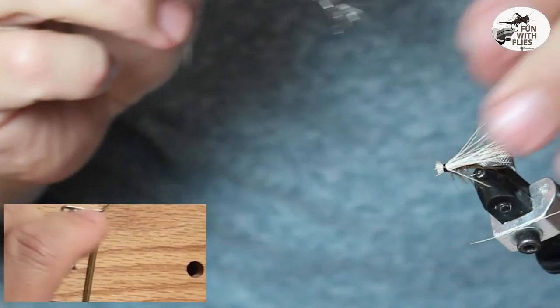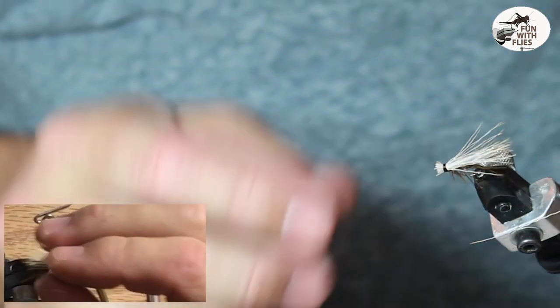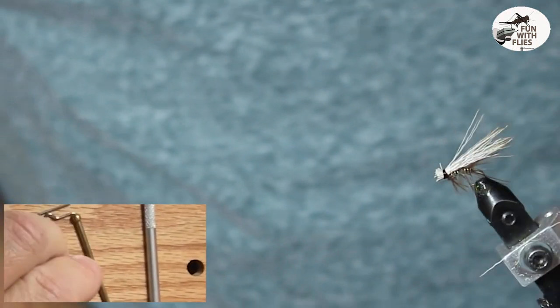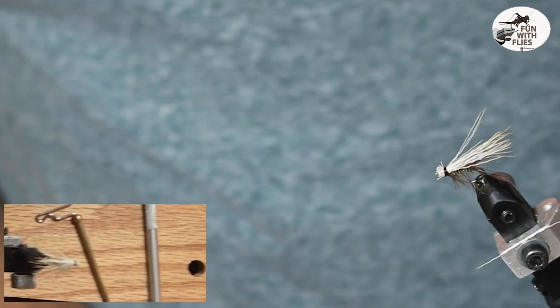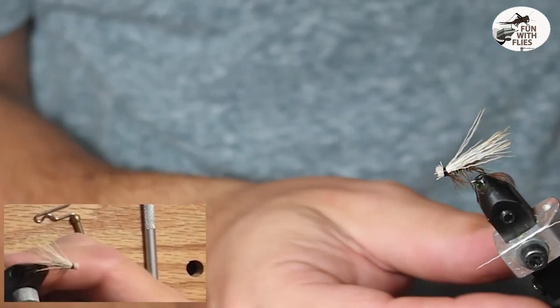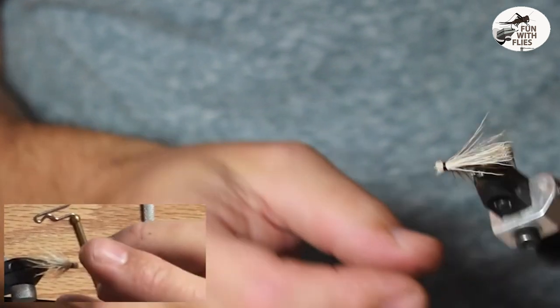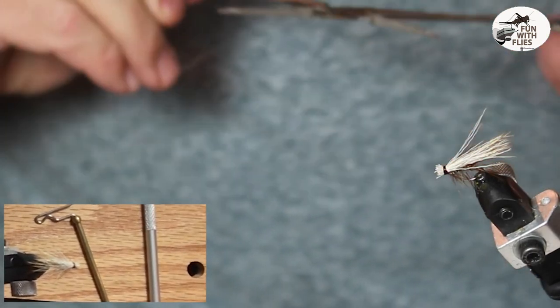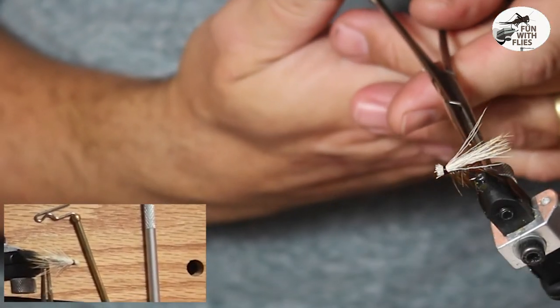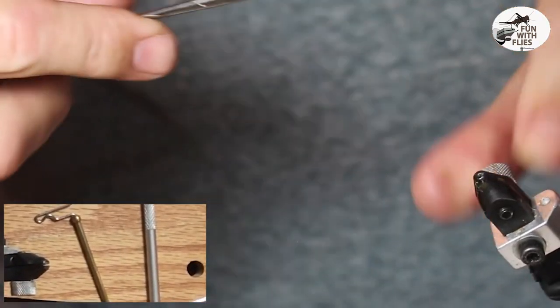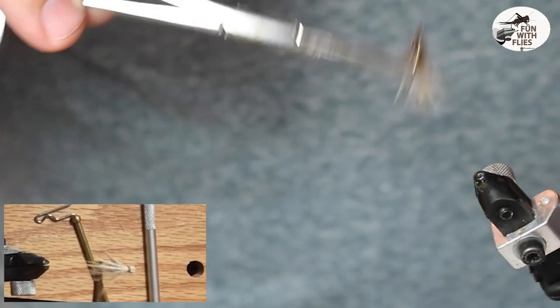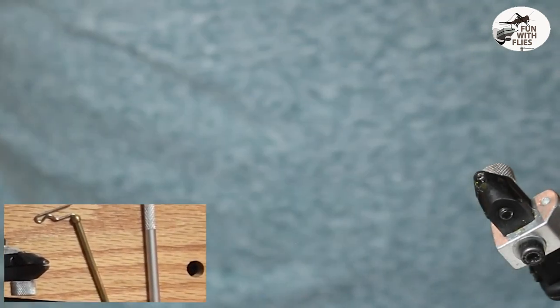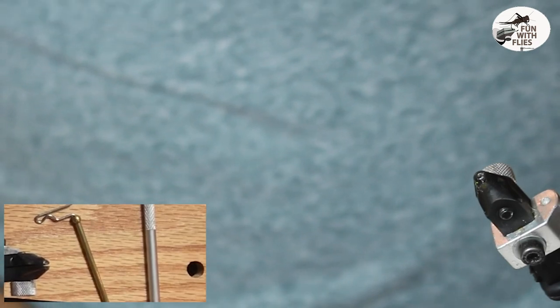Nice elk hair caddis. You can tie them a little bigger if you like. These things will make a nice hopper imitation. Right here I just got this on a pretty small size 14. And that'll do it. So I want to thank you for joining. That's your elk hair caddis. Have a good day. It's George of Funnflies. Hope to see you on the next video.